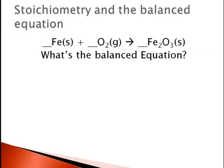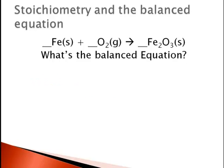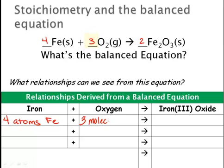Our balanced equation is going to give us some pieces of information. If we look at the skeleton equation Fe plus O2 yields Fe2O3, pause the video and balance this equation. Now that we have the balanced equation, we can determine some relationships. The 4 tells us there are 4 atoms of iron, the 3 tells us there are 3 molecules of oxygen, and the 2 tells us there are 2 formula units of Fe2O3.